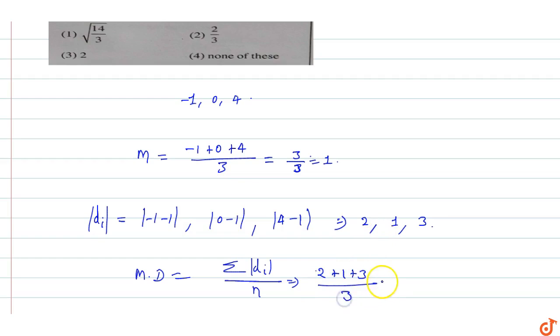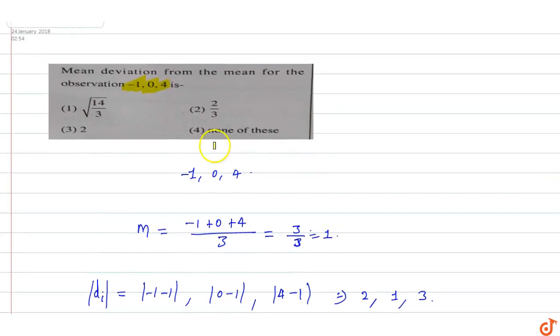The answer value is 6/3 which is equal to 2. So the mean deviation is 2, this is our answer equal to 2. So mean deviation of this observation is equal to 2, which means option C will be the correct option.